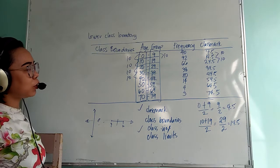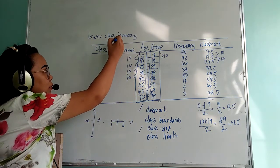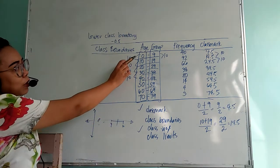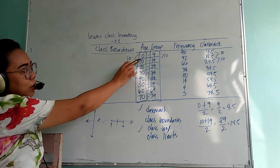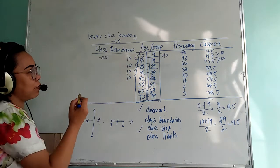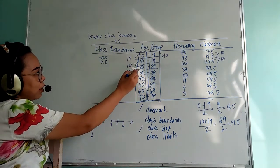You simply subtract the lower limit with 0.5. For the first lower limit, we have 0. You subtract it with 0.5, so you will have negative 0.5. Then 10 minus 0.5, we have 9.5.